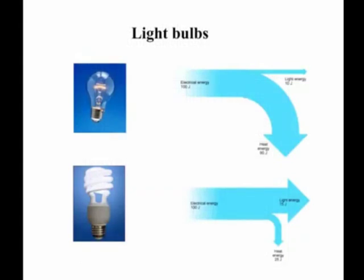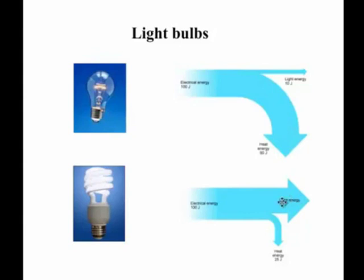Here we can see what Sankey diagrams can be used for — comparing two light bulbs. I've got an old-fashioned filament lamp and an energy-saving bulb. The Sankey diagram for the filament lamp shows 100 joules of electrical energy going in, with only 10 joules of useful light energy out and 90 joules of heat energy wasted. Whereas for the energy-saving bulb, 100 joules goes in and 75 joules of useful light comes out, with only 25 joules of wasted heat energy. The diagrams clearly show that the energy-saving bulb wastes much less heat energy than the traditional filament lamp.